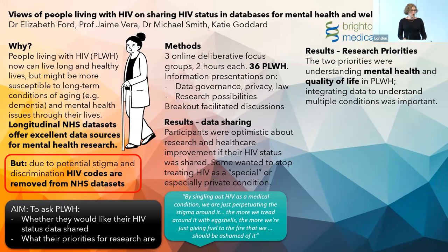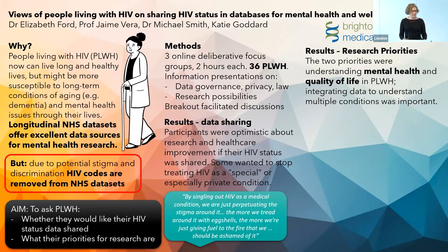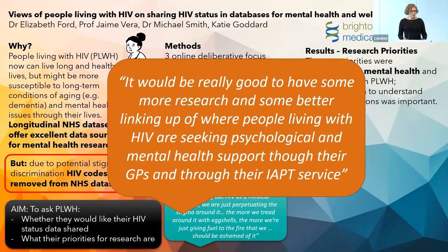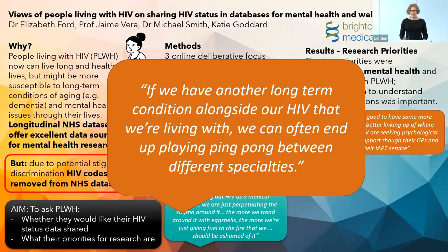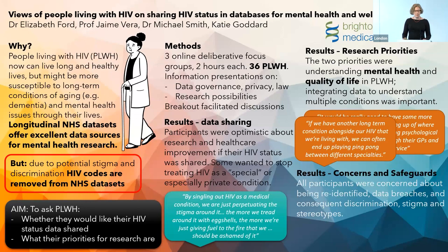We asked about their research priorities. The most common things they talked about were understanding the mental health, quality of life, and social context of people living with HIV. They also hoped that integrating data would help understand the conjunction between their HIV and other conditions. One person said, 'It would be really good to have better linking up of where people are seeking psychological mental health support through GPs and IAPT.' Another said people can end up playing ping-pong between different specialties, because their HIV doctor didn't know how to treat their long-term condition, and their other consultant didn't know how to treat the HIV.